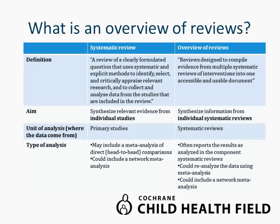A systematic review is defined in the Cochrane Handbook glossary as a review of a clearly formulated question that uses systematic and explicit methods to identify, select, and critically appraise relevant research, and to collect and analyze data from the included studies. An overview of reviews is considered a review designed to compile evidence from multiple systematic reviews into one accessible and usable document. The key distinction is the unit of analysis: in a systematic review it is the primary study, whereas in an overview of reviews the unit of analysis is the systematic review itself.